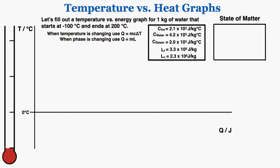We're going to make a temperature versus energy graph for 1 kilogram of water that starts at negative 100 degrees Celsius and ends at positive 200 degrees Celsius. I have a box with information about water — its specific heat as ice, water, and steam — and its latent heat of fusion and vaporization. I also have a box on the top right that's going to display what state of matter the water is in at each point along the graph.